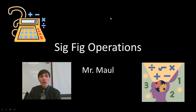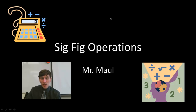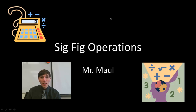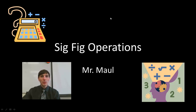Greetings everyone, this is Mr. Maul. Today we're going to do a podcast on sig fig operations. Now that you've learned how to count sig figs, what's important is that when we take measurements, we have to do something with those measurements. We'll involve them in calculations, and the error and uncertainty associated with those measurements has to carry through. We're going to talk about the different kinds of calculations to find out how many sig figs can be in our final answer.